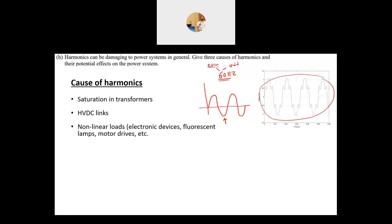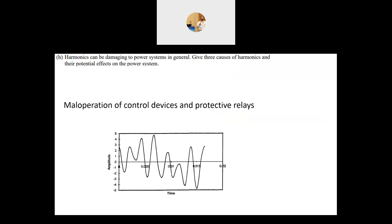But the most important cause of harmonics is non-linear loads. Our loads are not linear anymore—we have electronic devices, fluorescent lamps, motor drives and so on. These types of loads are non-linear and cause harmonics in the power system.